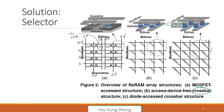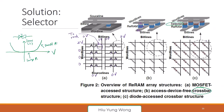How is this selector going to help us? Let's look at its IV characteristic — this time in linear scale. When the voltage across the selector is small, you have a very large resistance. When the voltage across it is large, it has small resistance because you have a lot of current. Now if I put this selector together with the resistive memory...